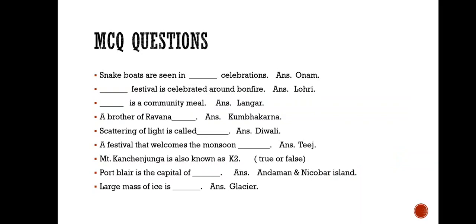Mountain Kanchenjunga is also known as K2 — true or false? False, that is not true. K2 is called Godwin Austin. Mountain Godwin Austin is known as K2. Port Blair is the capital of Andaman and Nicobar Island.